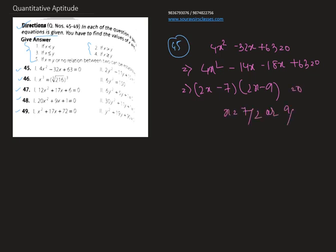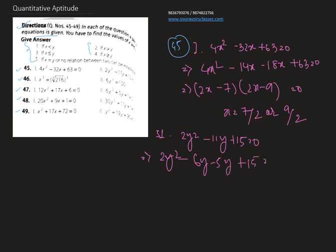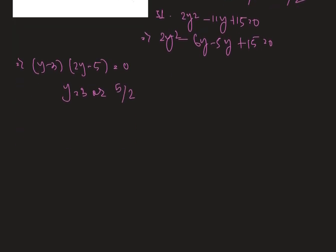So x = 7/2 or x = 9/2. From equation 2, we get 2y² − 11y + 15 = 0. After factorizing, we get 2y² − 6y − 5y + 15 = 0, which gives (y − 3)(2y − 5) = 0. Hence y = 3 or y = 5/2. Comparing the values, x is clearly greater than y.